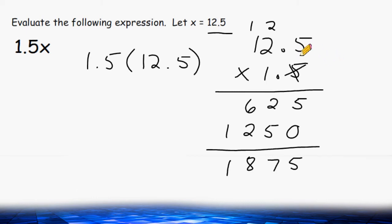So what we have to do is count the total number of place values that are after each one of these decimals. After this decimal we have one place value. And after this decimal we also have one place value for a total of two place values. So in our answer we need exactly two place values after the decimal.